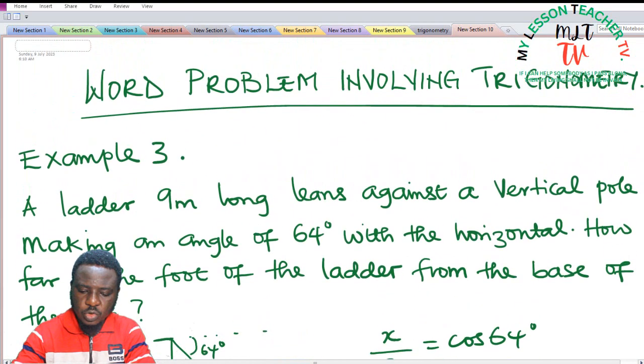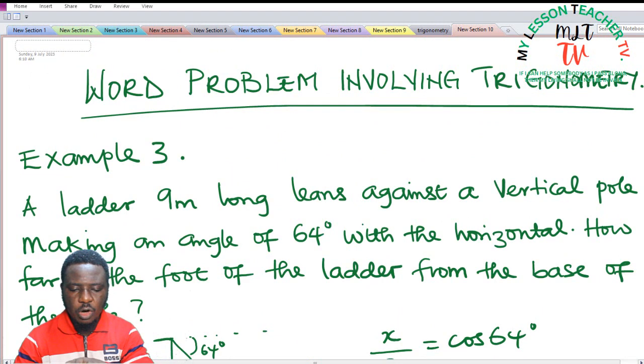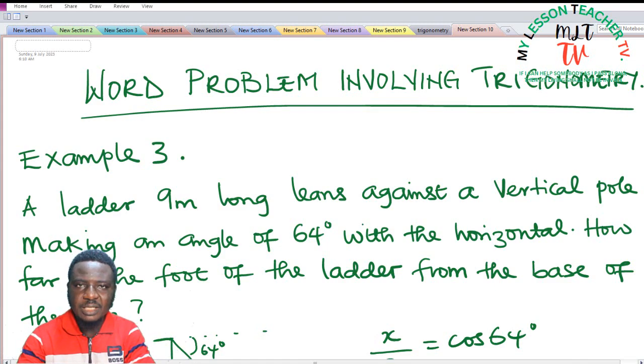All you need to do is interpret the question using a right angle triangle, then identify each of the sides of the right angle triangle and where the angle is given. Then you can solve for the unknown. We shall then take the next question.